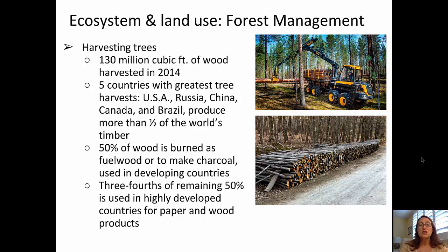Much of that forested land is actually harvested. In fact, 130 million cubic feet of wood were harvested from federal forest lands in 2014. There are five countries that have the greatest amount of tree harvest — the U.S. being one of them, the other four being Russia, China, Canada, and Brazil — producing more than half of the world's timber. Half of the wood harvested is burned as fuel wood or to make charcoal used in developing countries, and three-fourths of the remaining half is used in highly developed countries to produce paper and wood products.